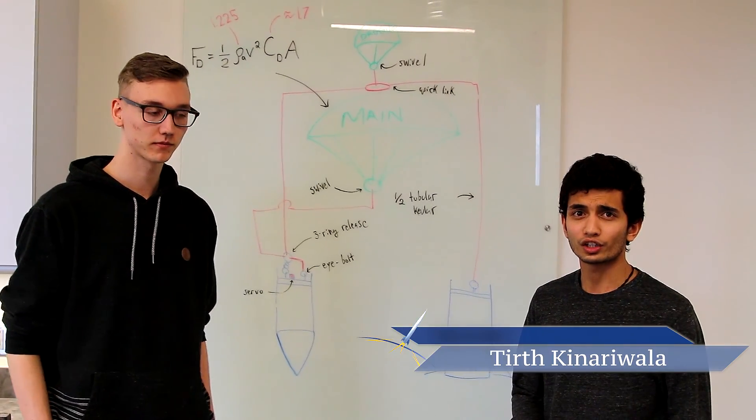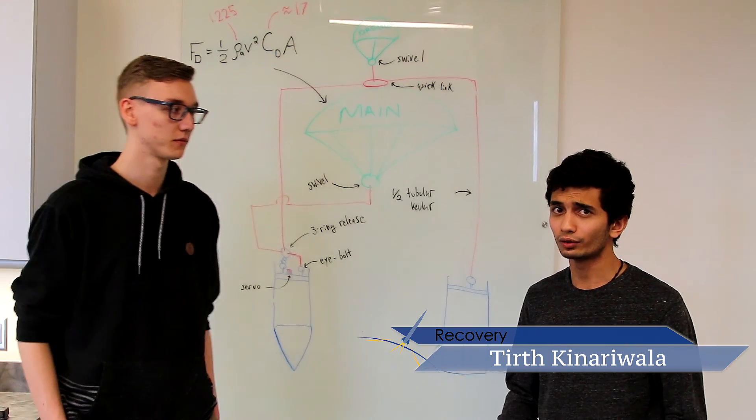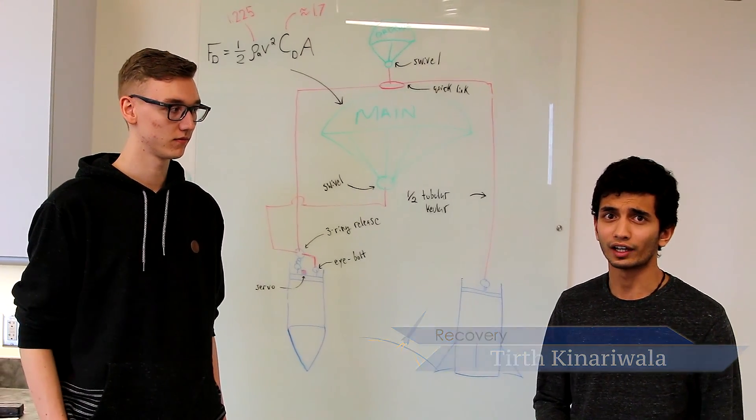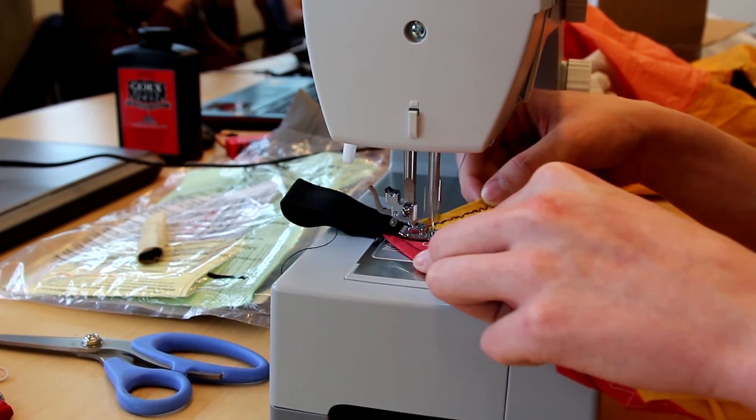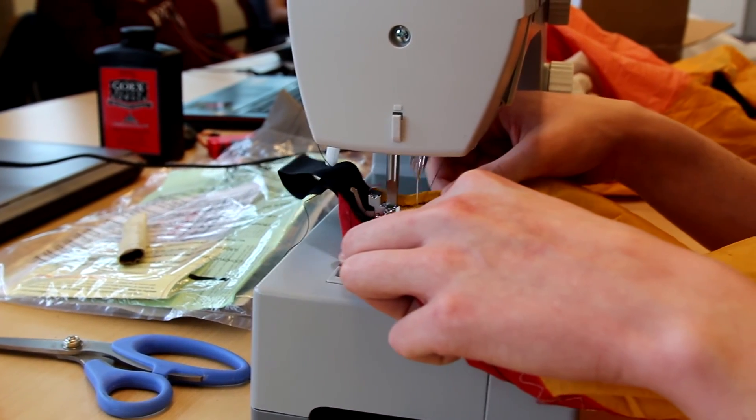In recovery, we are in charge of the deployment of a payload and the safe descent of our rocket. We are doing this by using a dual deployment system in which we have designed, developed, and manufactured the parachutes in-house.